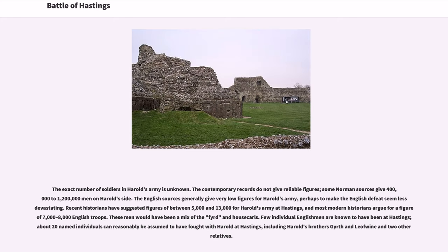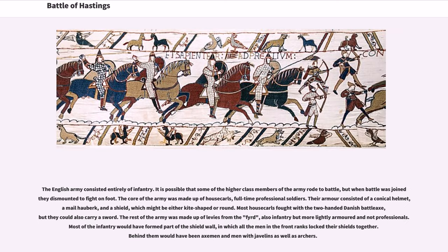The exact number of soldiers in Harold's army is unknown. The contemporary records do not give reliable figures; some Norman sources give 400,000 to 1,200,000 men on Harold's side. The English sources generally give very low figures for Harold's army, perhaps to make the English defeat seem less devastating. Recent historians have suggested figures of between 5,000 and 13,000 for Harold's army at Hastings, and most modern historians argue for a figure of 7,000 to 8,000 English troops. The English army consisted entirely of infantry; it is possible that some higher class members rode to battle, but when battle was joined they dismounted to fight on foot.